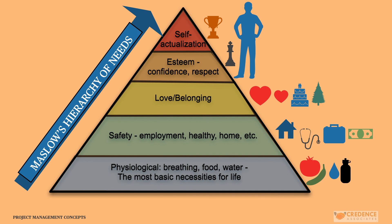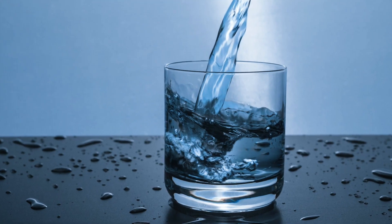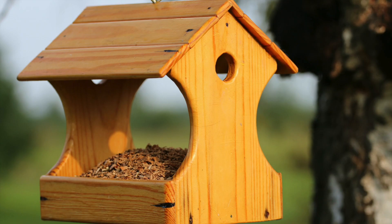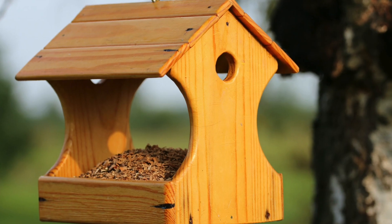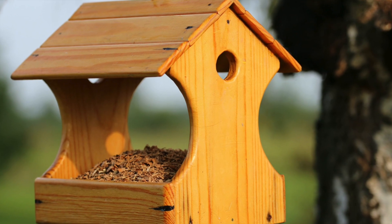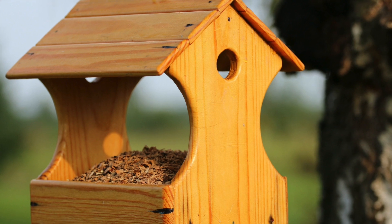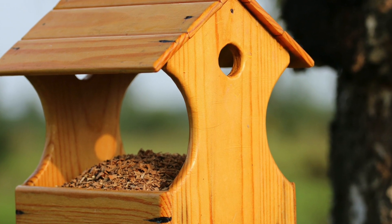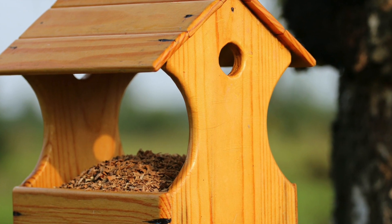The first stage of the pyramid is physiological needs, which serve as the basic need. It includes fresh air, pure water, sufficient food, comfortable living and working conditions, clothing, shelter, and clean toilets, which are basic essentials for a human being.